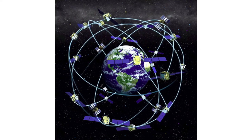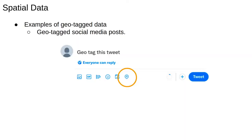With everyone nowadays carrying around an extremely accurate GPS device at all times, more and more data comes with spatial tags that associate that data with a place on the earth. GPS location information can be very accurate, with resolutions down to a meter. Even if a device doesn't have GPS, it's still possible to infer general location information, for example triangulating mobile phone towers, Wi-Fi signals, or even from user-supplied tags.